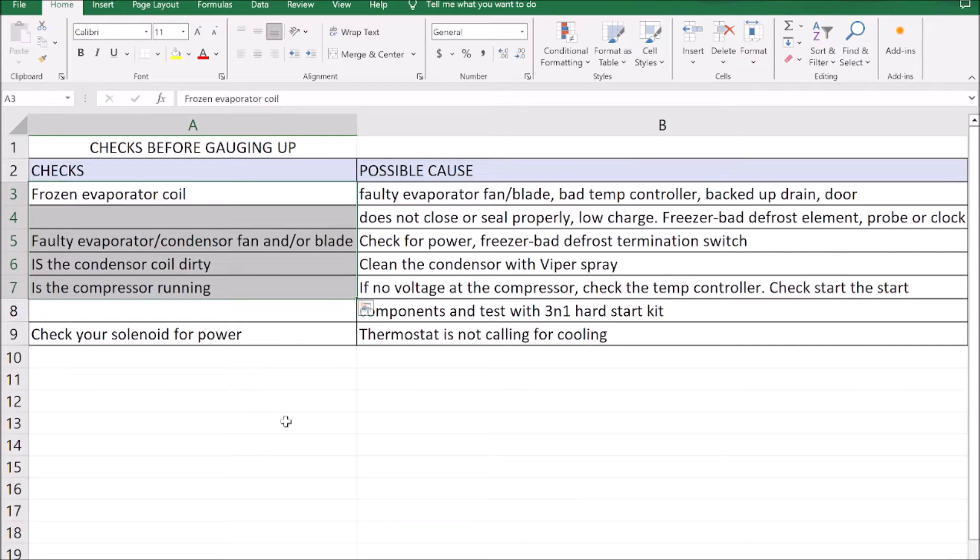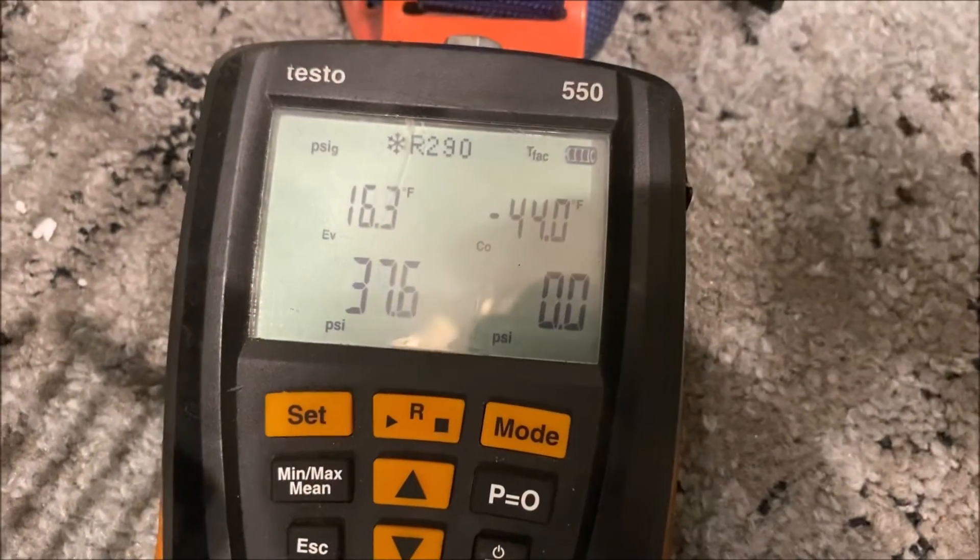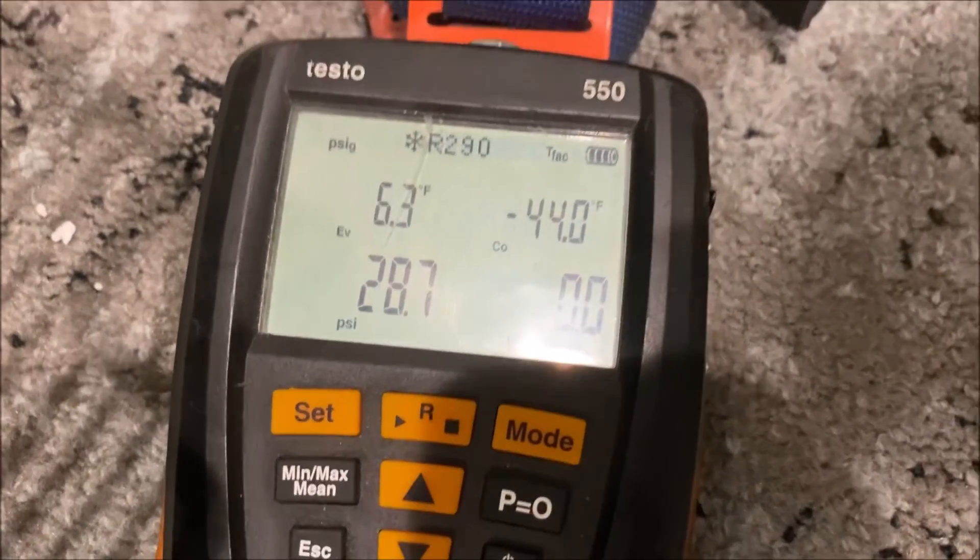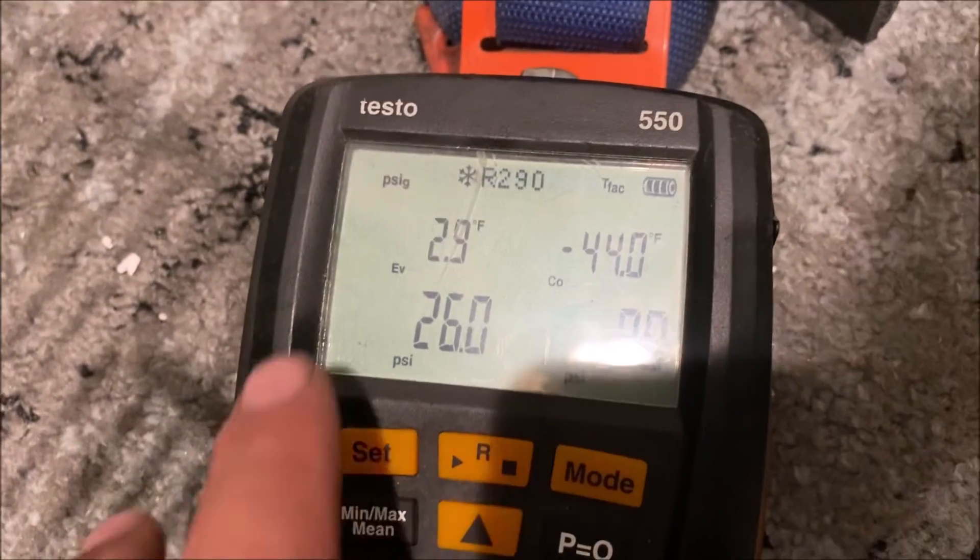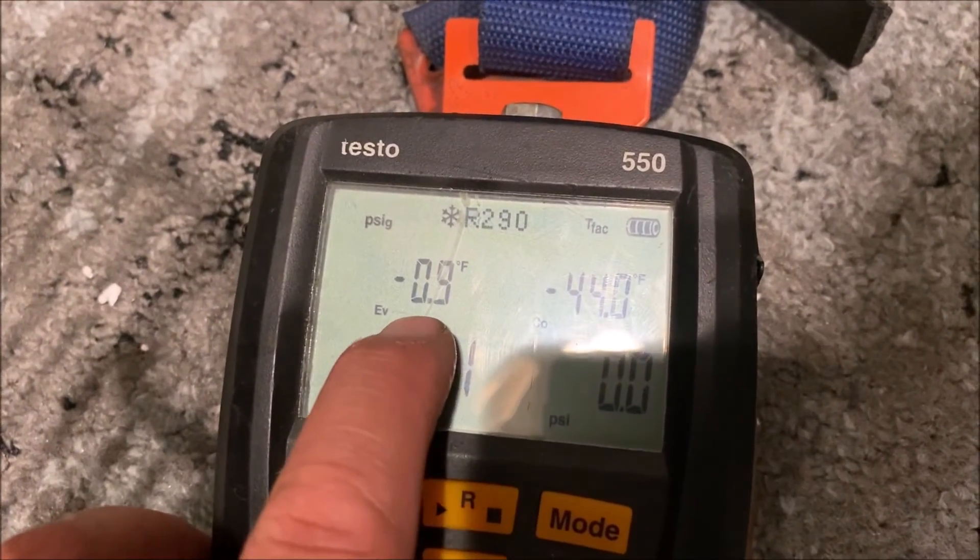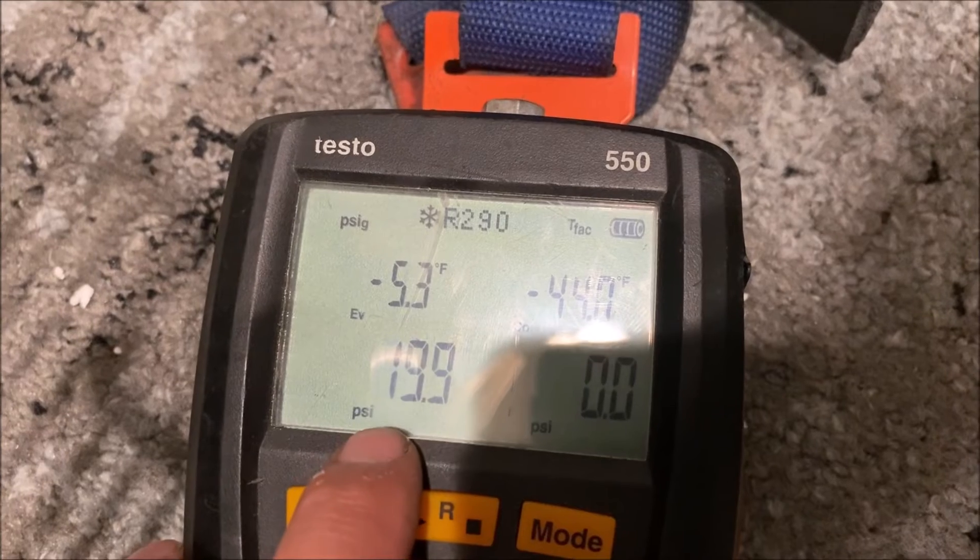At this point we can gauge up to see what's going on inside the refrigeration system. I've put a line tap only on the low side. I don't want to put too many holes in this system. Based on this you can see we're pulling down into a vacuum.